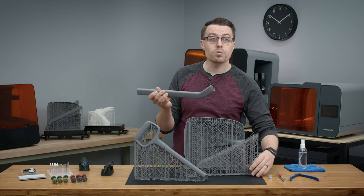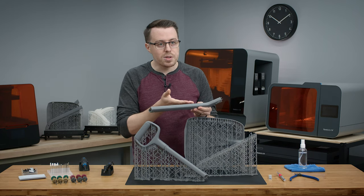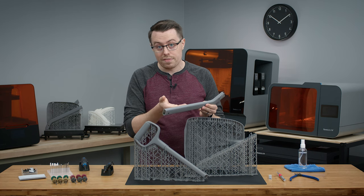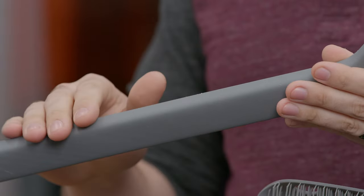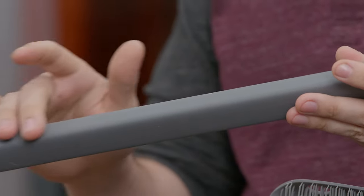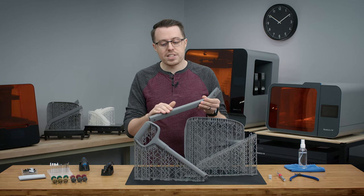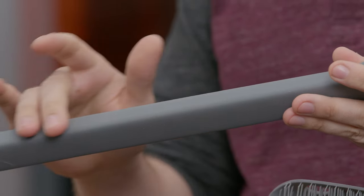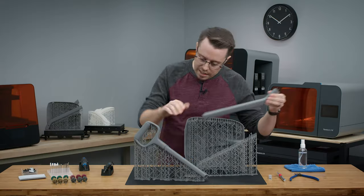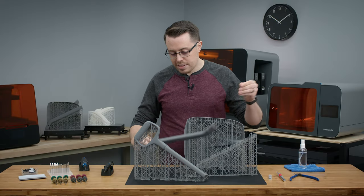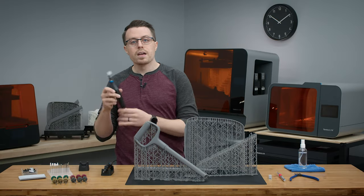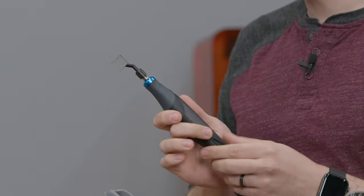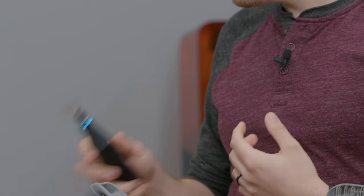However, anytime you do remove supports, there are definitely going to be some bumps and support marks left over. This is where that rotary tool and linear sander are going to come in handy. Now, large flat surfaces, kind of like the face of this shaft here, and the rest of the handle would be ideal for using our linear sander, which is great for, as we mentioned, long flat surfaces and some gentle curves.